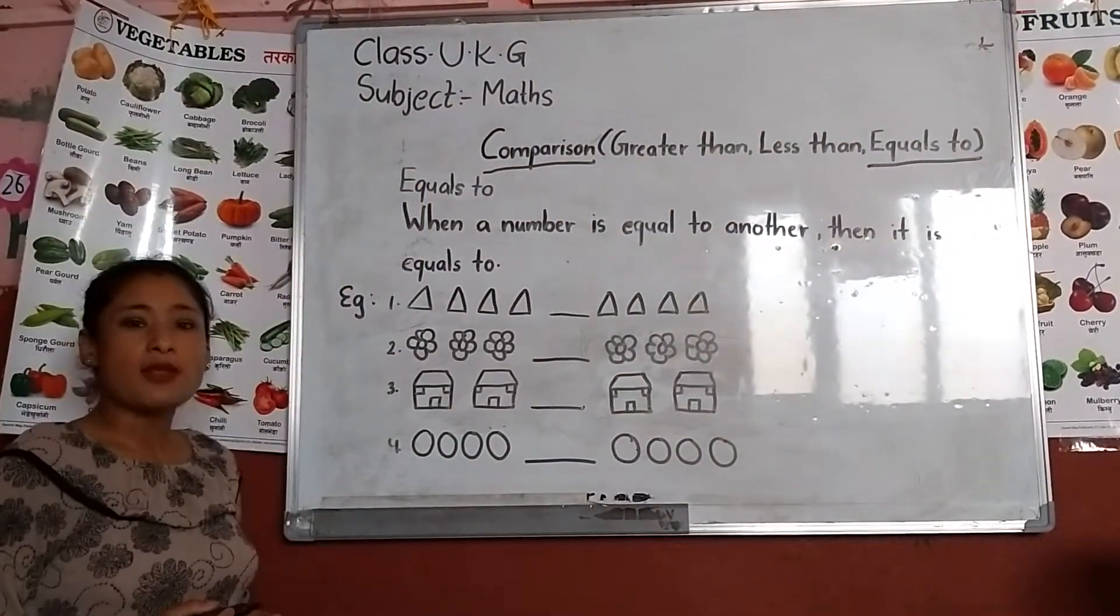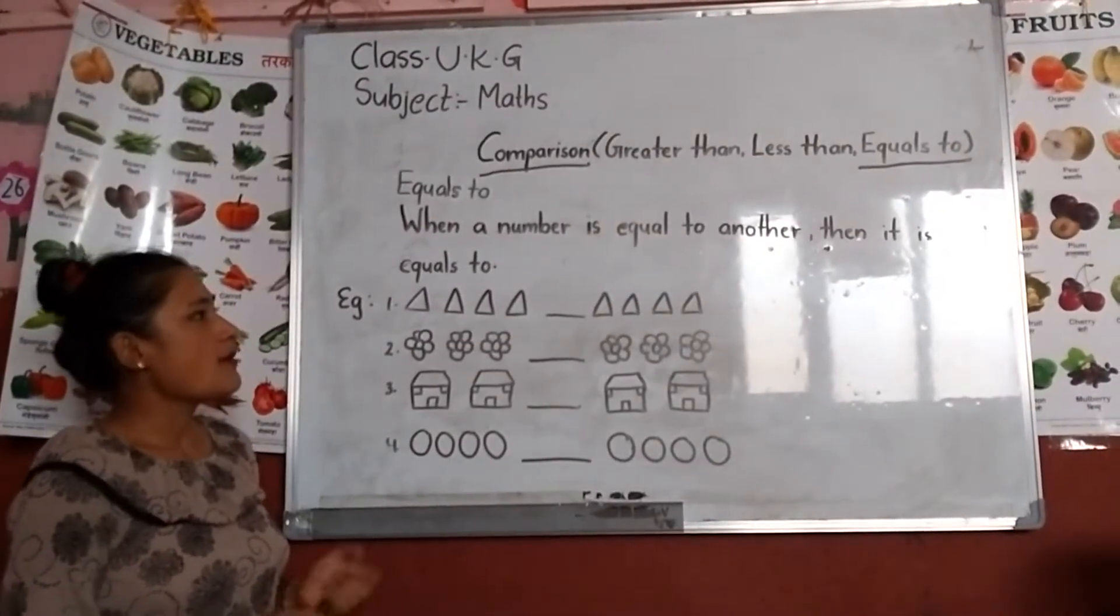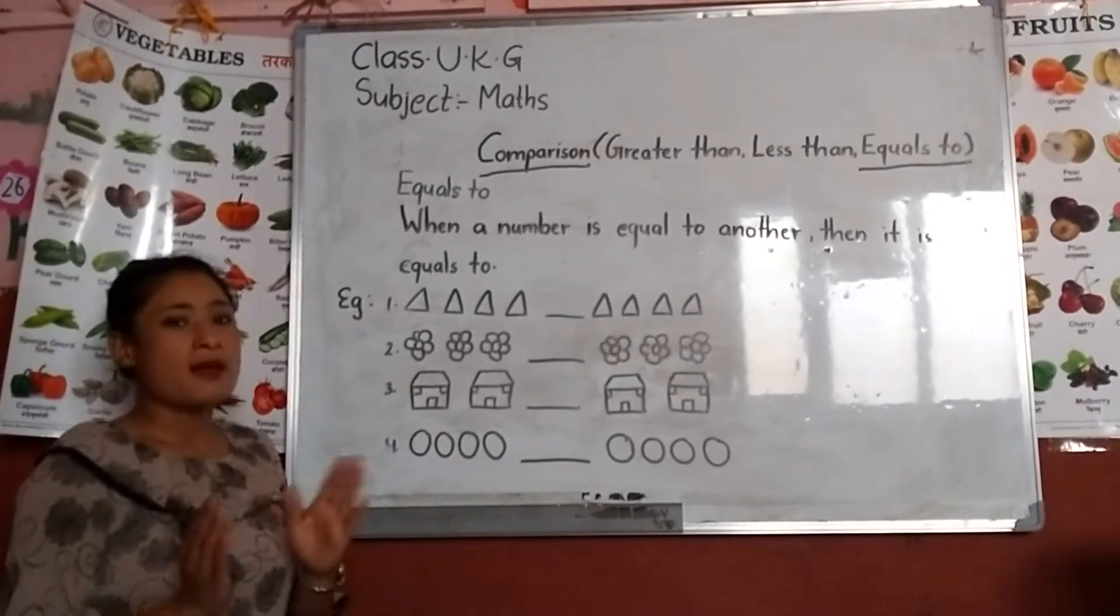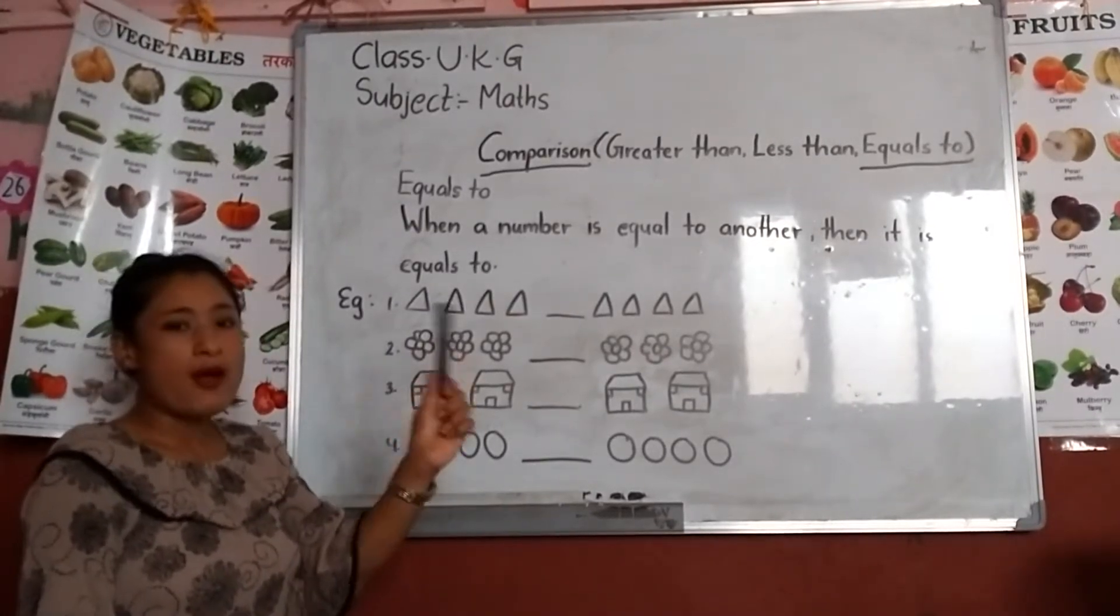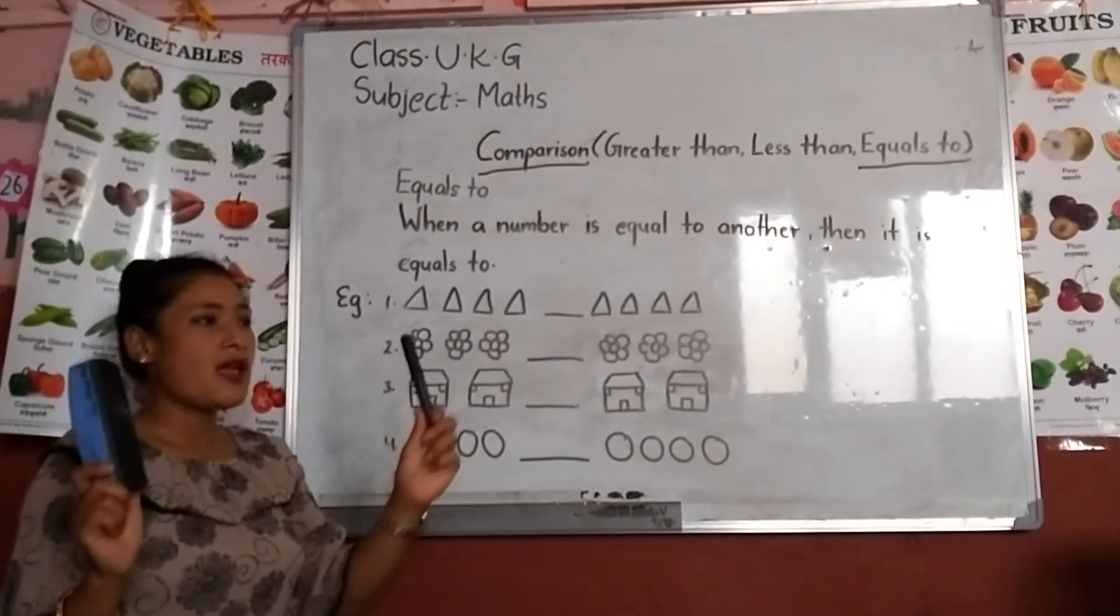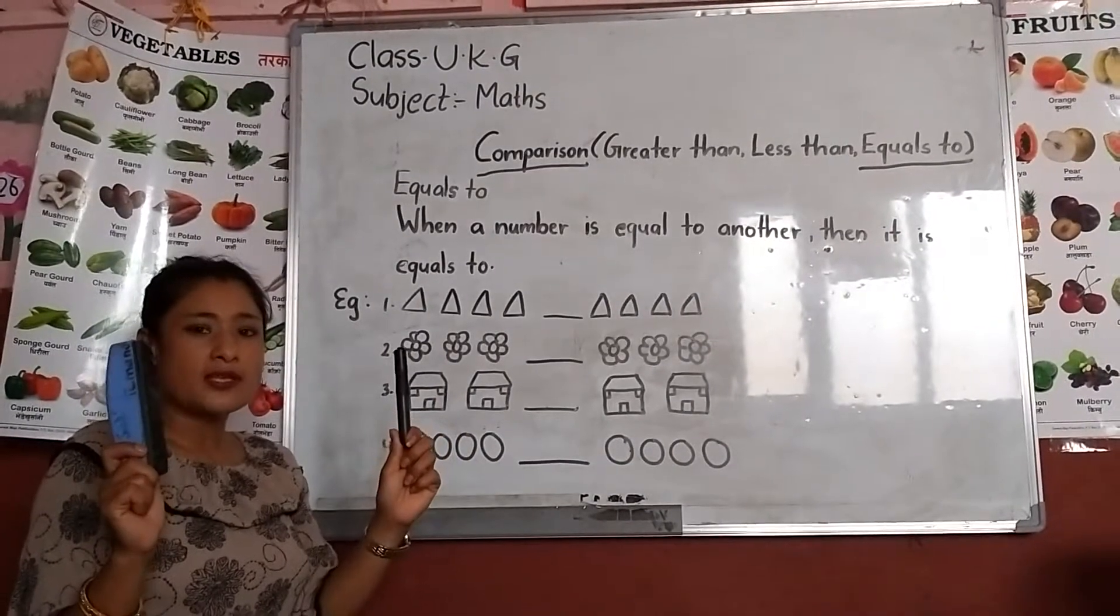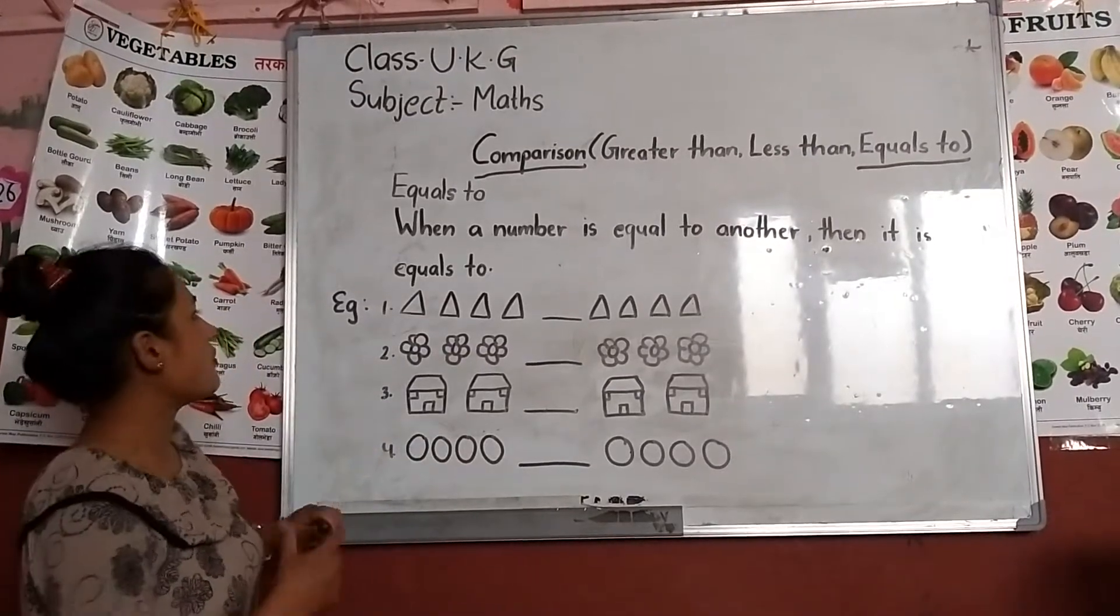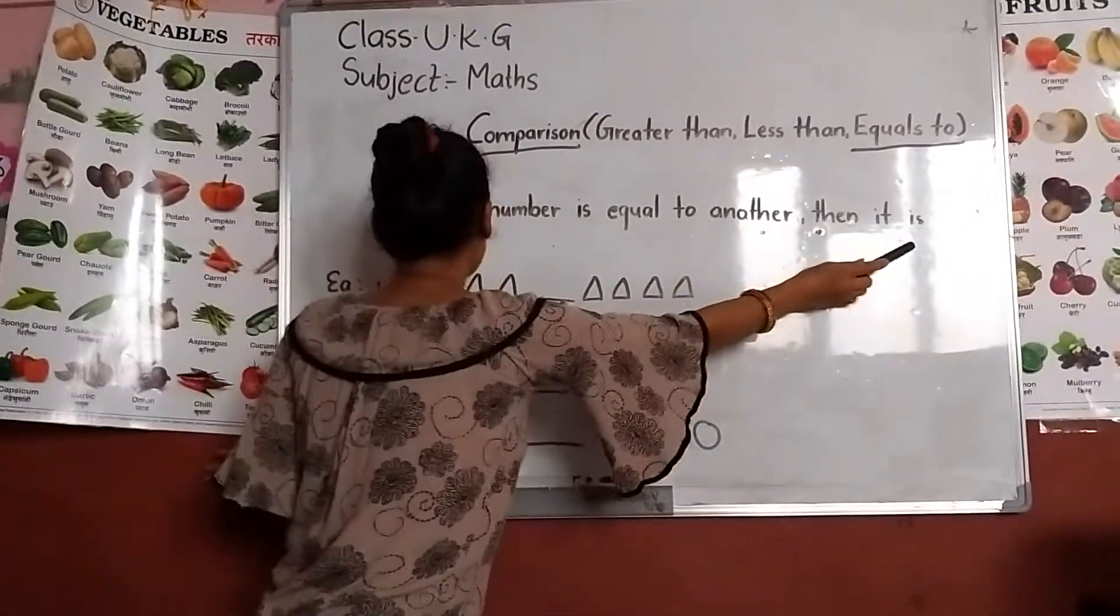When a number is equal to another, then it is equal to. The word is equal to. Because it is equal to.